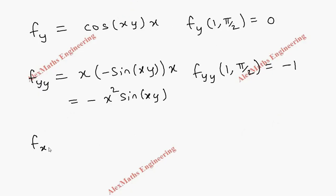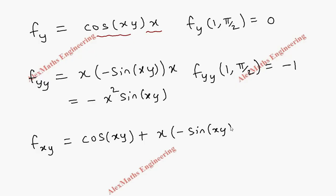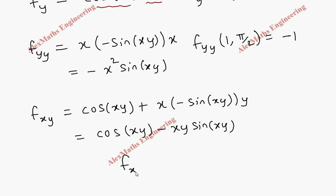We also need fxy. Starting from fx = y·cos(xy), we differentiate with respect to y using the product rule: the first term gives cos(xy), and the second term gives -y · sin(xy) · x. So fxy = cos(xy) - xy·sin(xy). At (1, π/2): cos(π/2) = 0, sin(π/2) = 1, so fxy = 0 - 1·(π/2)·1 = -π/2.